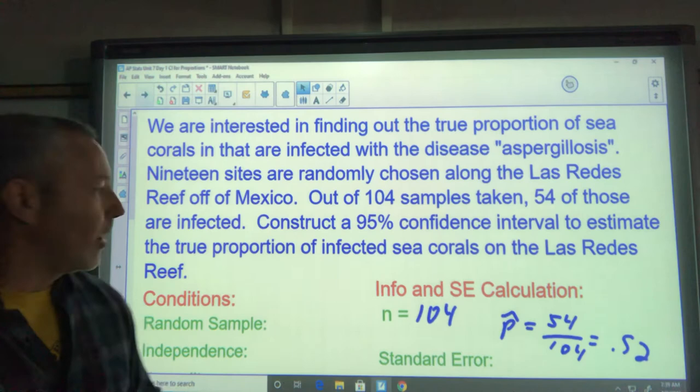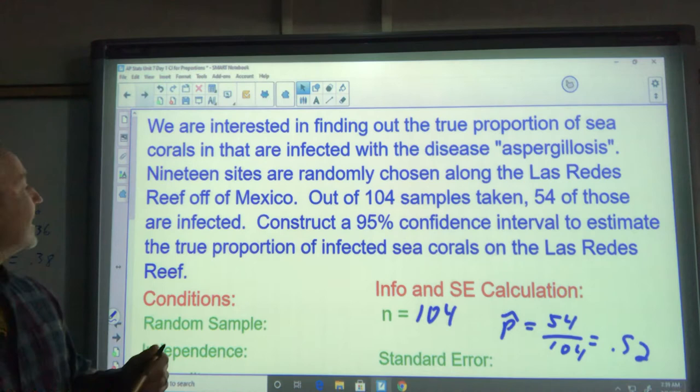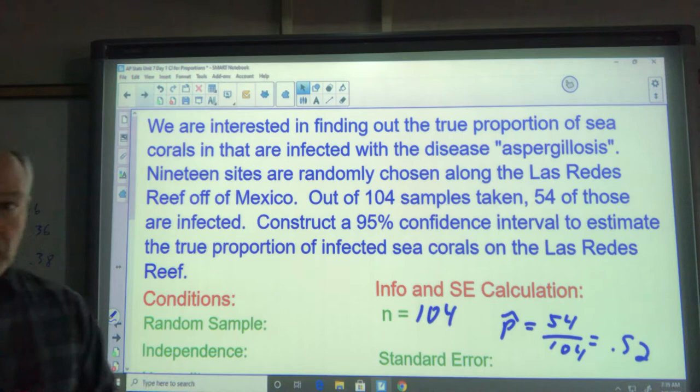Here is our first problem. I'll go really quick. I've sort of done it for you already. We're interested in finding out the true proportion of sea corals that are infected with the disease aspergillosis. 19 sites are randomly chosen along the Las Redes Reef off of Mexico. Out of 104 samples taken, 54 of those are infected. So I took 104 samples.